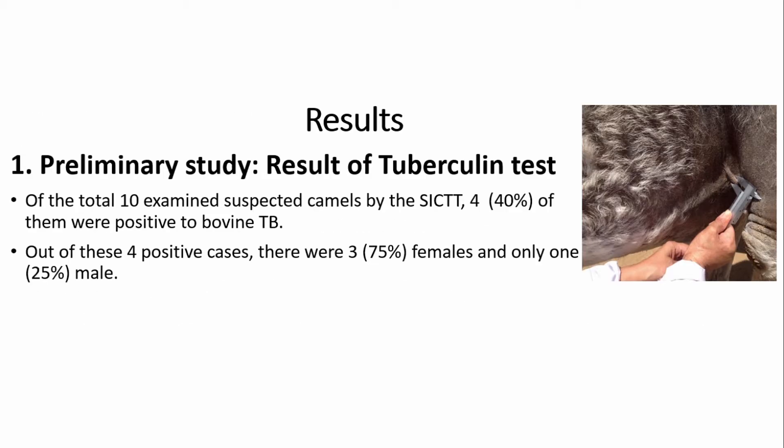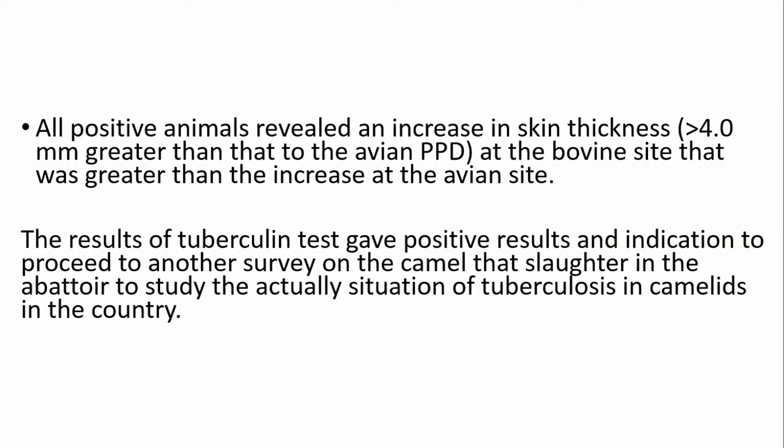Results: For the preliminary study, of 10 examined suspected animals tested by the single intradermal comparative tuberculin test, four animals were positive — 40% positive to bovine tuberculosis. Of these four positive cases, three were female (75%) and one was male (25%). All positive animals revealed an increase in skin thickness of more than 4 mm, greater than the avian PPD at the bovine site. These positive results prompted proceeding to a further survey on slaughtered camels.